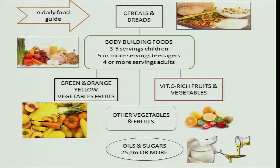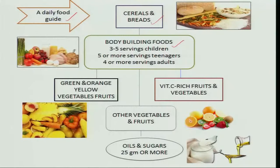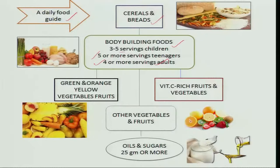In meal planning, follow a daily food guide. First take cereals and breads because the maximum quantity in our diet is cereals and bread. Then think of the body-building foods: 3 to 5 servings for children, 5 or more servings for teenagers, and 4 servings for adults. Children are in the growing period and require more protein; teenagers are very active and also growing so require a little more; adults require protein only for maintenance, so the number of servings required is lesser.